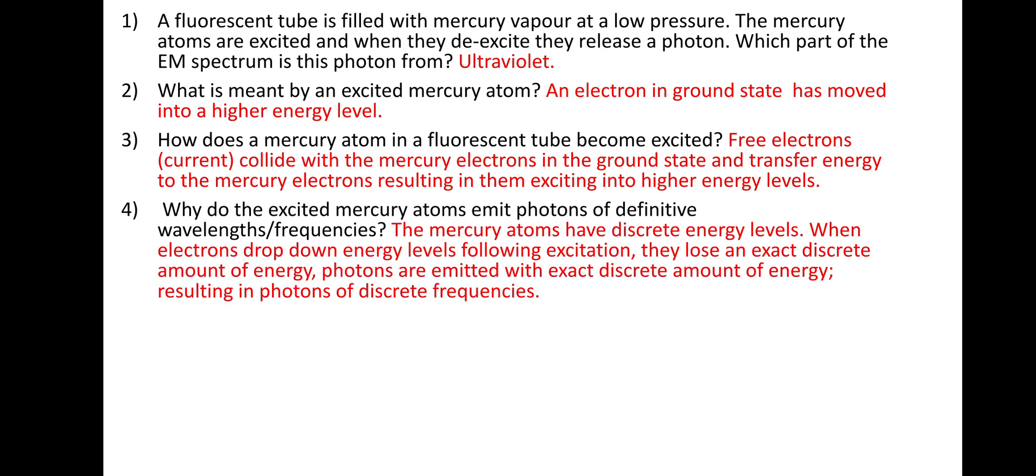Fourth question, why do the excited mercury atoms emit photons of definitive wavelengths or frequencies? So this is your bog-standard Niels Bohr's energy levels. The mercury atoms have discrete energy levels, as do all atoms. When the electrons drop down energy levels following the excitation, they lose an exact discrete amount of energy. Therefore, photons are emitted with exact discrete amounts of energy. So we get photons of discrete frequencies, or you could say discrete wavelengths, or you could say discrete energies, as they're all related: E equals HF and E equals HC over lambda.